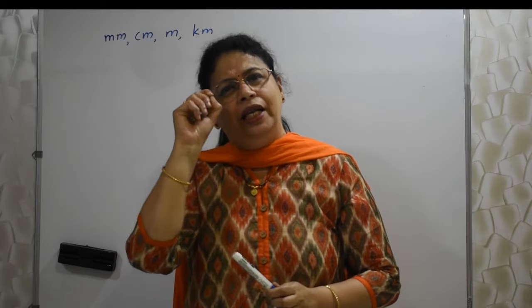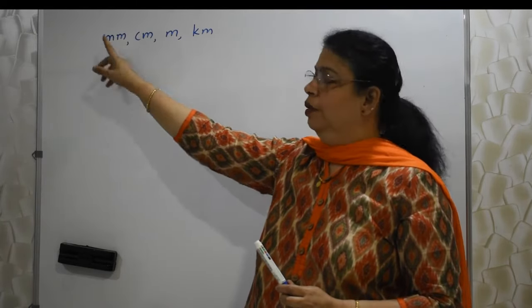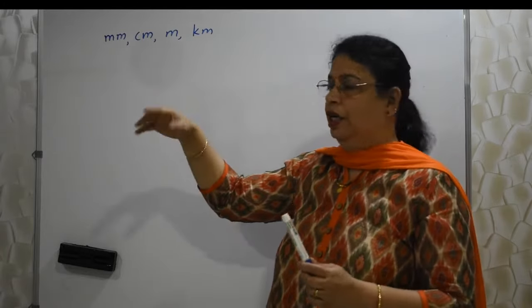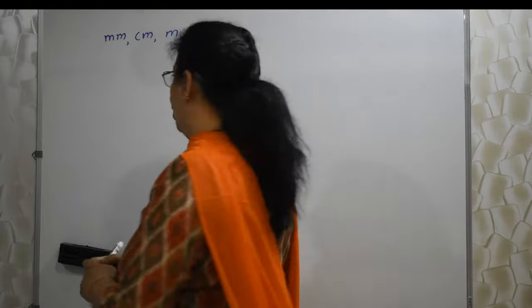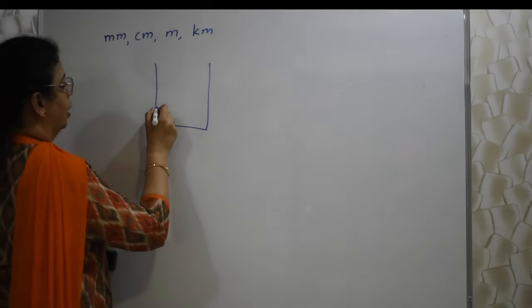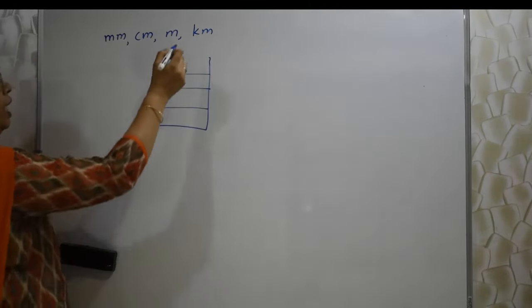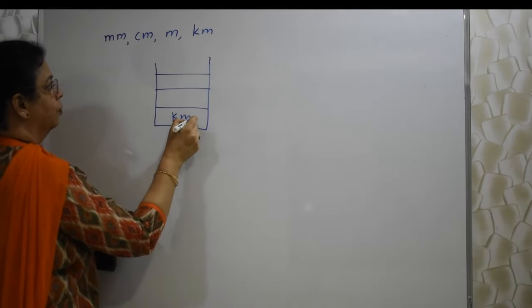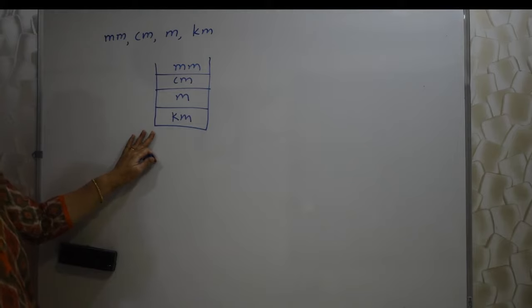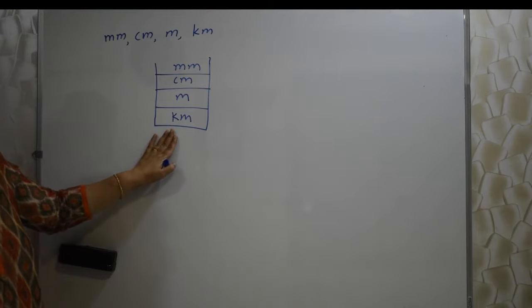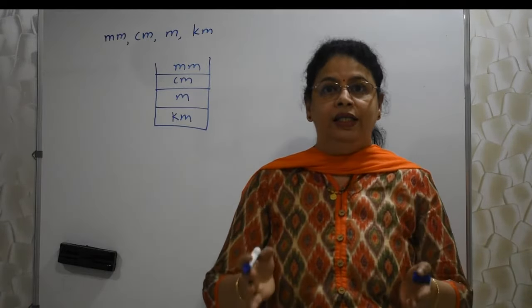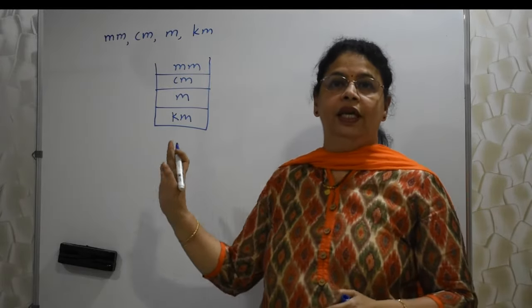If you want to measure a very tiny small thing then we make use of millimeter. Little bigger thing, centimeter. Meter, still bigger, and the biggest one is kilometer. See, I am going to draw a small box like this or a bucket like this and I am going to divide this. This may not sound mathematical, but for you as a student to understand the relationship between all these four things, this is the easiest way.